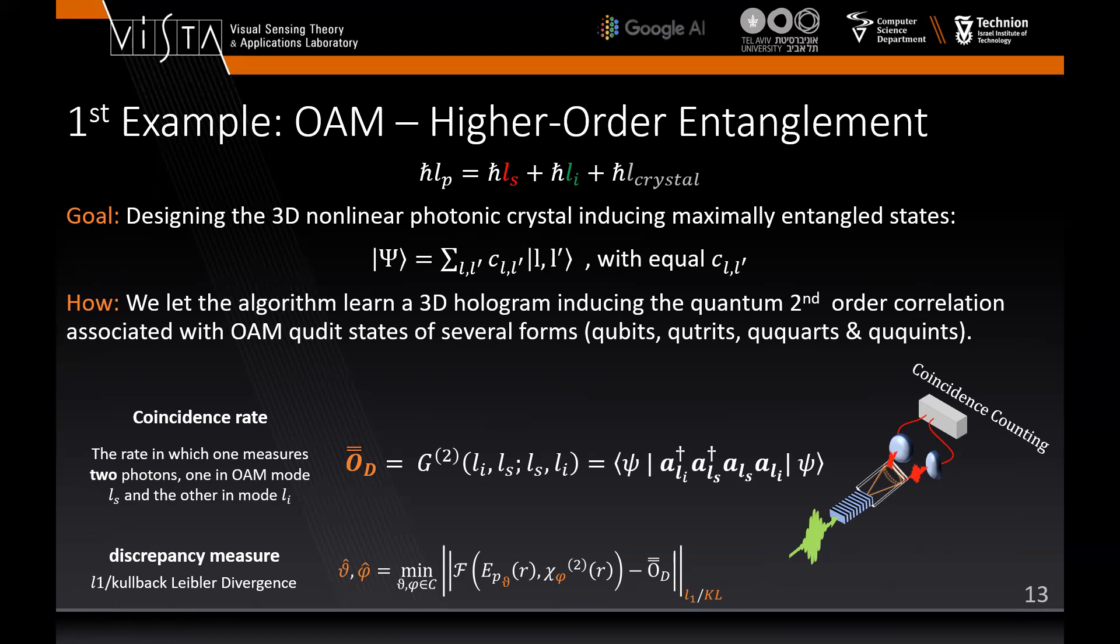Now we will show some results. As mentioned, the angular momentum of the photons is conserved in the interaction. We'll design a 3D nonlinear photonic crystal inducing maximal entanglement states while keeping the pump simple. The second-order correlation will serve as an observable calculated at the end of the interaction by projecting the states in the Laguerre-Gauss space. The discrepancy measure is taken to suit discrepancy between probability distributions, such as L1 and Kullback-Leibler divergence.